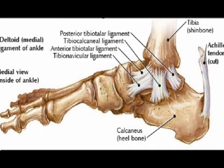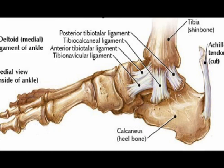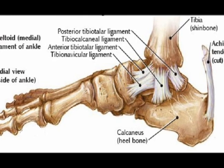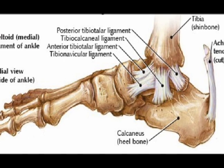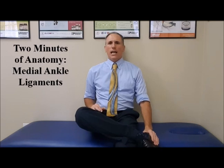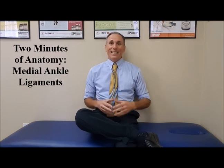Ligaments attach bone to bone and they prevent excessive motion of a joint. The medial ankle ligaments are collectively known as the deltoid ligaments and they prevent an excessive amount of eversion. Eversion is an ankle motion where the foot is turned outwards. So the medial ankle ligaments help to provide stability to the ankle joint by preventing an excessive amount of eversion.